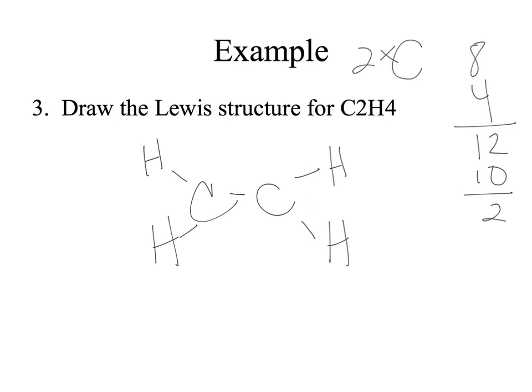Hydrogen is already happy — we can't put any more electrons around these outer atoms because hydrogen can only handle two. Each carbon, however, only has six. I'm going to take these extra two electrons and put them in a double bond between the two carbons. Now each carbon has eight, so we're done.